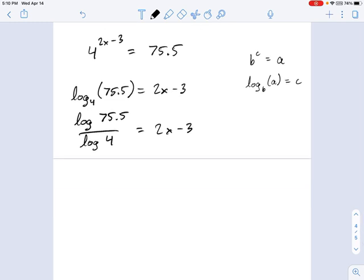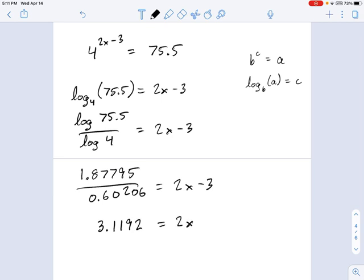So let's see what that is. Log of 75.5 is going to be 1.87795, and log of 4 is 0.60206 equals 2x minus 3. So now I'm going to divide those two things by each other. We're going to say log of 75.5 divided by log of 4. And that gives us 3.1192 equals 2x minus 3.